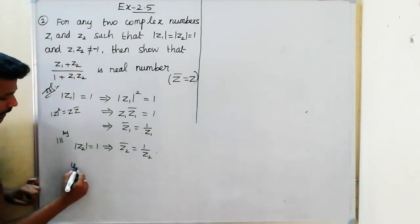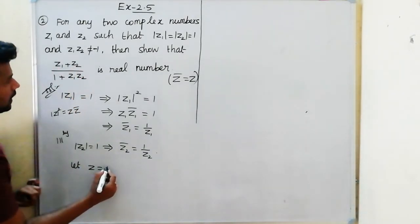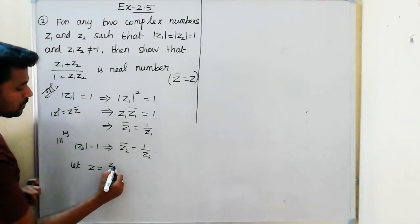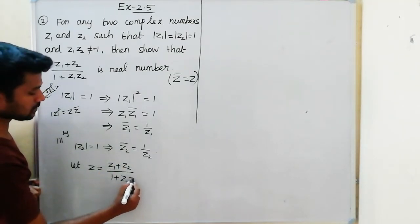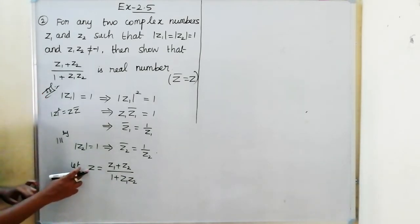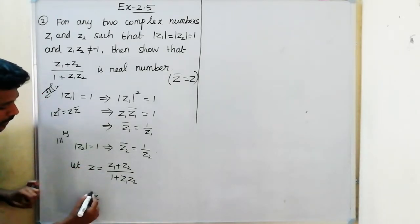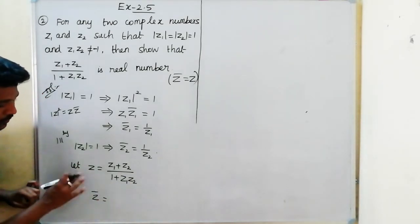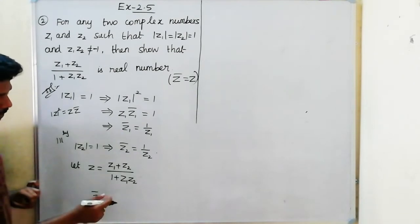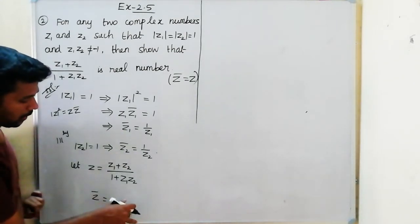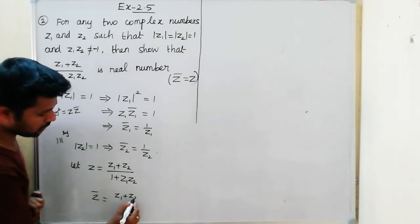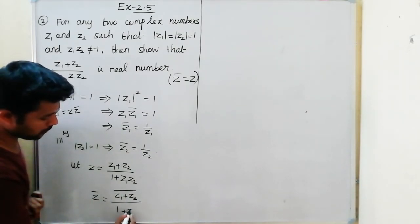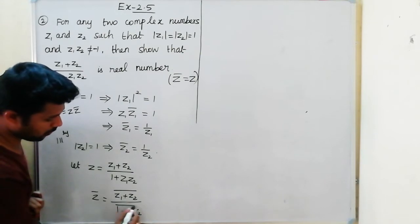Now, let z equal (z1 plus z2) divided by (1 plus z1·z2). We need to find z̄ and show it equals z. So z̄ equals the conjugate of the whole expression, which is the conjugate of (z1 plus z2) divided by the conjugate of (1 plus z1·z2).